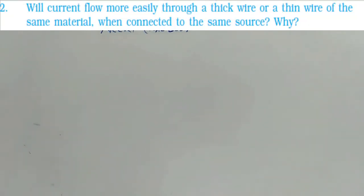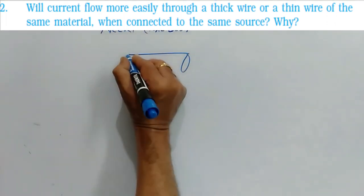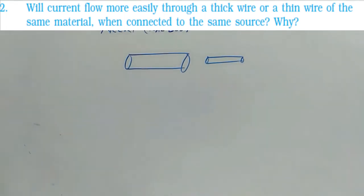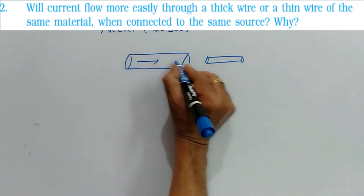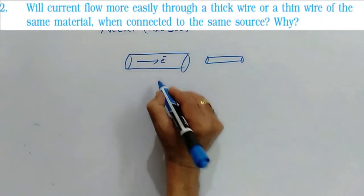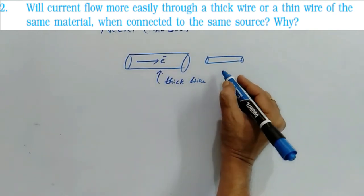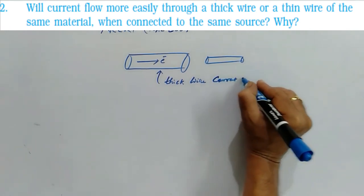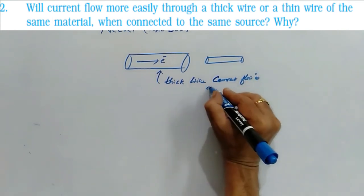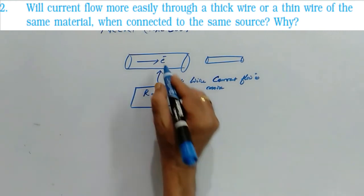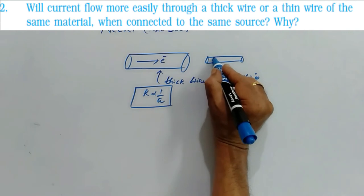In the next question it is asked, will the current flow more easily through a thick wire or thin wire? So thick wire is having larger area of cross section, thin wire is having lesser area of cross section. So we have studied electrons can pass through larger area of cross section easily. Therefore in thick wire the current flow is more. What is the reason? The resistance is inversely proportional to area of cross section. That is here the electrons will have lesser resistance, here the electrons will have larger resistance.